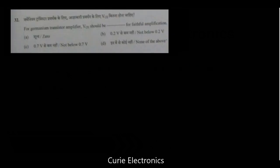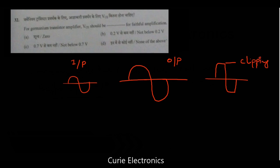Question number 32. For germanium transistor amplifier, VCE should be dash for faithful amplification. Now what do you mean by faithful amplification? A small amplitude input we are giving. For faithful amplification there should not be any distortion in the signal. So this is the output. So it is faithfully amplified. On the other hand if you see this signal, it is not faithfully amplified. Here what happened? Clipping occurred.